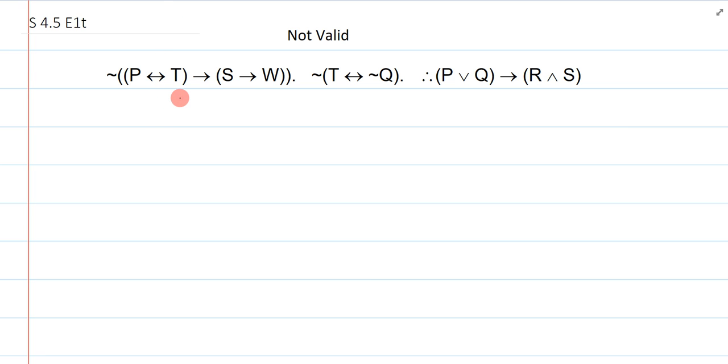So whenever I do a shortened truth table, I just do a couple things very quickly. First is I will just generate my list of atomics. So I have P, Q, R, S, T, W. Seems like a lot, but it's not a big deal.